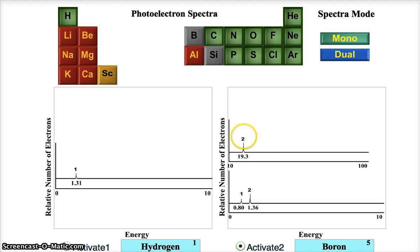Boron. First peak at highest energy is 1s2. Then we have 2s2. Then we have 2p1. Carbon. 1s2. 2s2. 2p2. And so on and so forth.